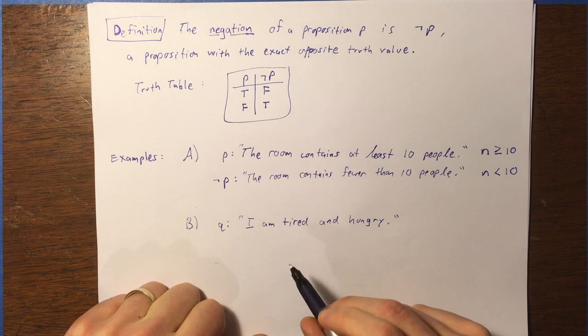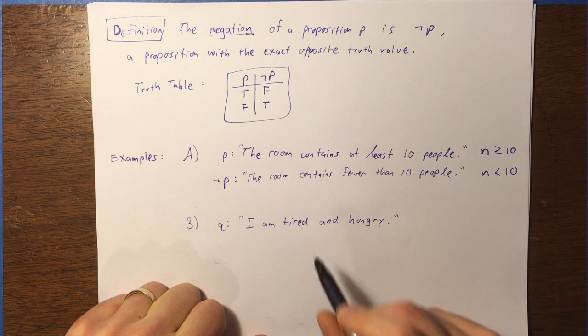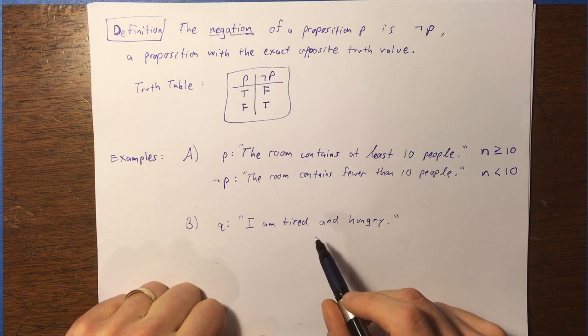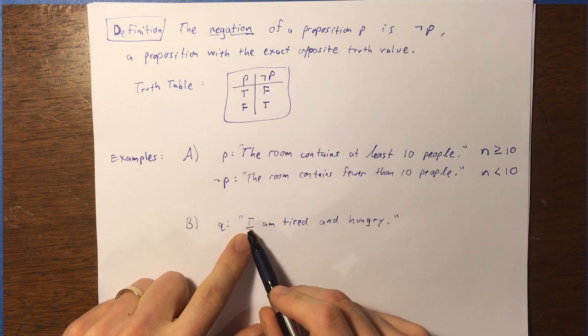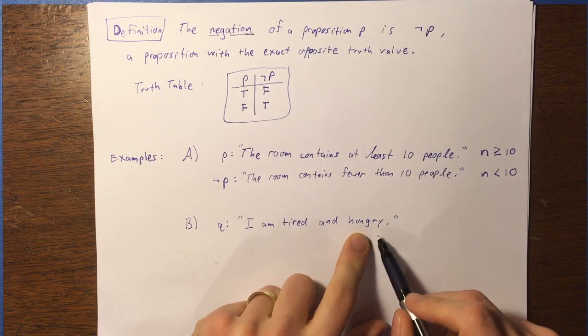The negation of that is going to be true whenever this is false and false whenever this is true. Well, if this requires, in order for Q to be true, it requires that you be, or that I be tired and hungry.